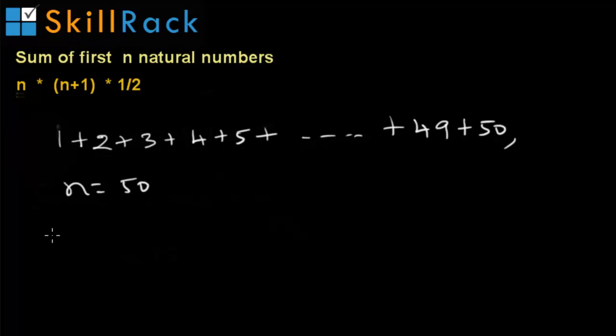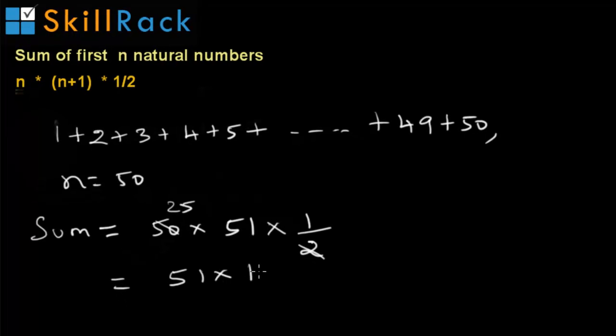So the required sum is equal to 50 into 51 by 2. We can write 51 into 25 as 51 into 100 by 4. So doing the calculations, we can figure out the sum is 1275.